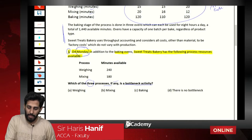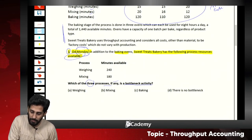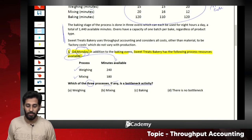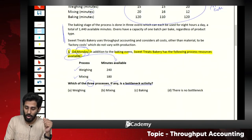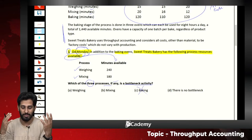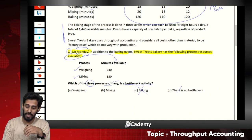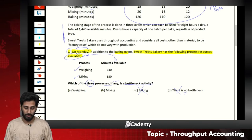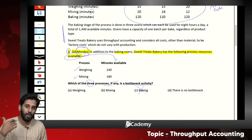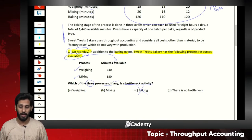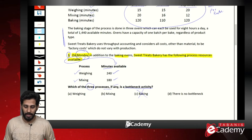On Monday, we are given the minutes available in the weighing process and the mixing process. Since only weighing and mixing are listed in the question, option C (baking) and option D (no bottleneck) are eliminated as likely answers. Available minutes are 240 for weighing and 180 for mixing.